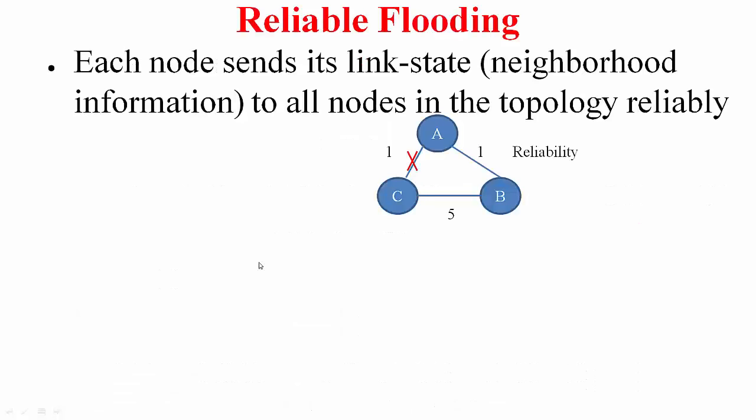Each node, if it somehow conveys its neighborhood information to all the nodes, this neighborhood information is henceforth called link state. So A will tell others that it is connected to B and to C at a cost of one each. So this is the neighborhood information that A will tell all the nodes in the topology. And if every node does this, finally A will know the entire topology information.